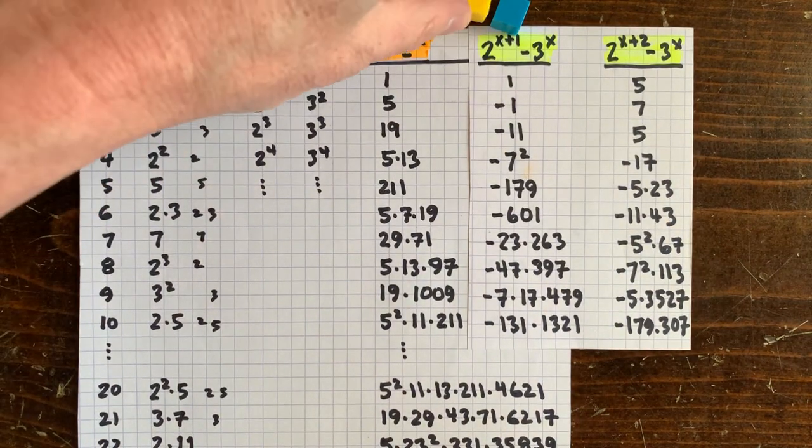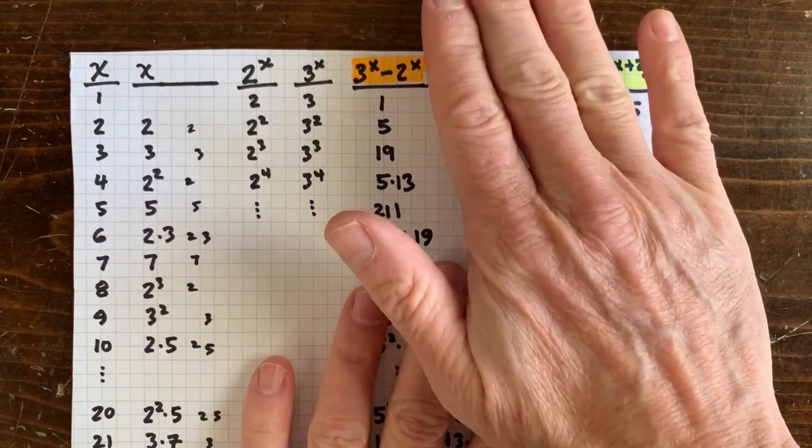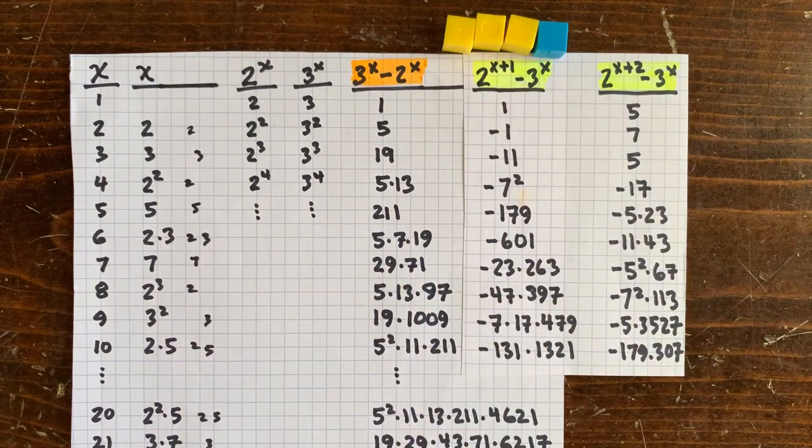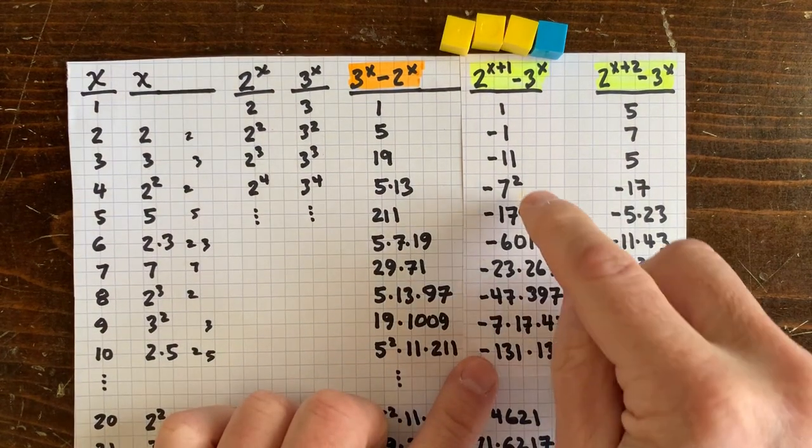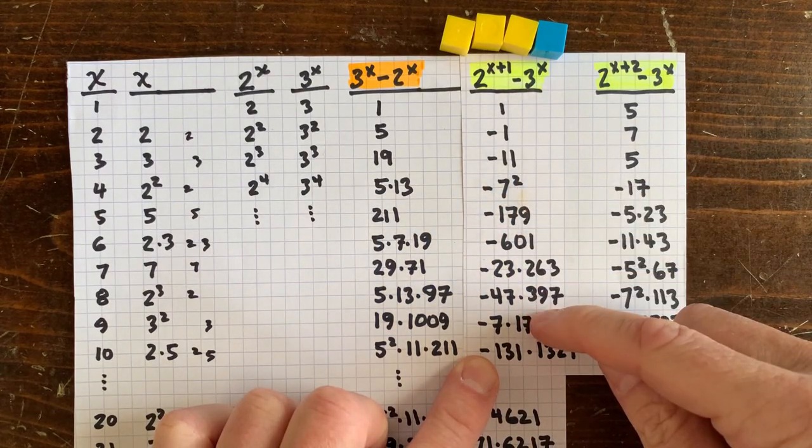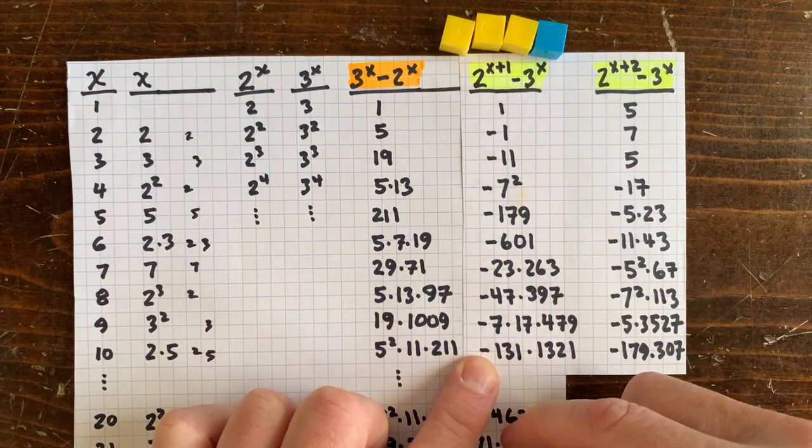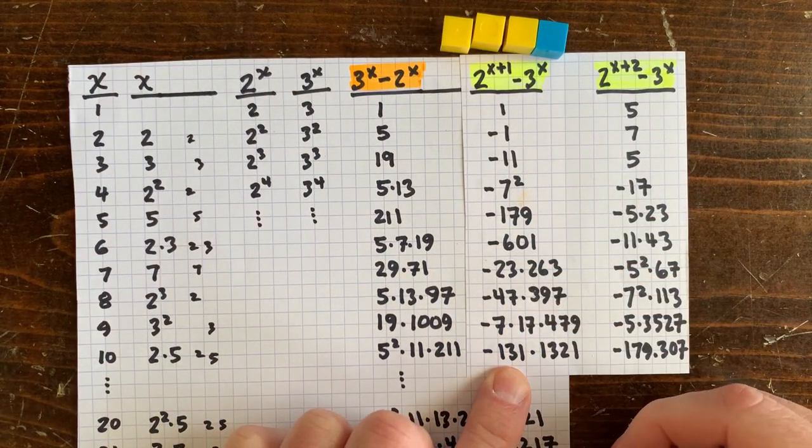That means we can write 2 to the k minus 3 to the x, in this case as 2 times 2 to the x minus 3 to the x. It looks like the 7s are evenly spaced, 6 apart. The 11s are evenly spaced, 10 apart. The 23s are evenly spaced, 11 apart.